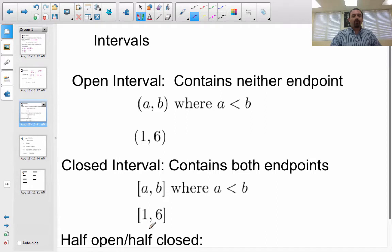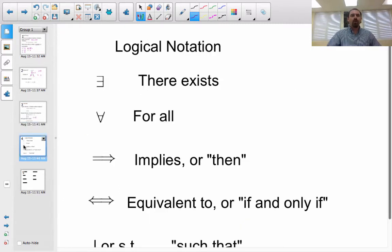And half open and half closed, you can imagine we could have an interval like this. And this would contain the 0.6, but not the 0.1, and it would contain everything in the middle. Whether or not this is half open or half closed is whether or not you're a glass half full kind of person or a glass half empty kind of person.